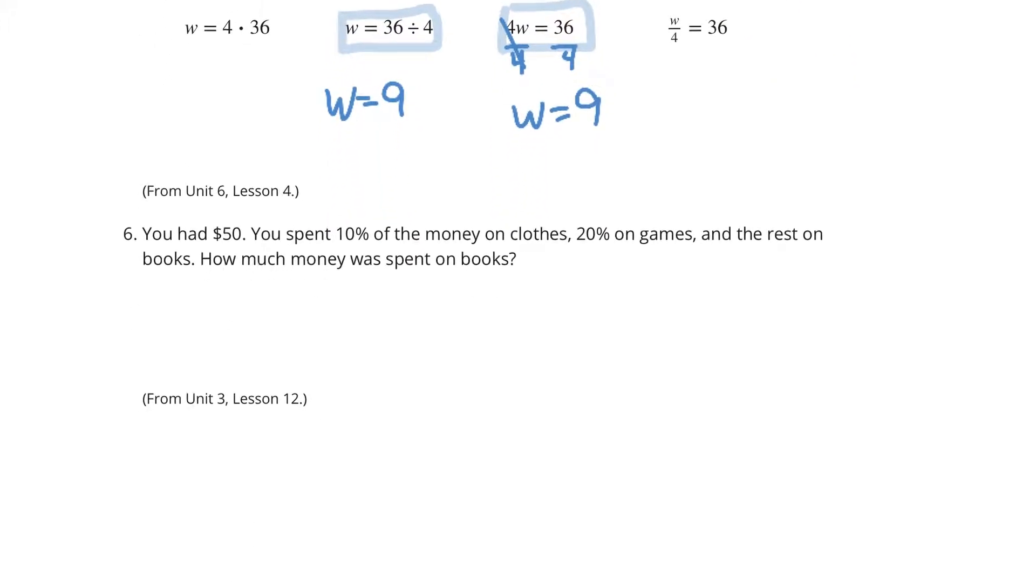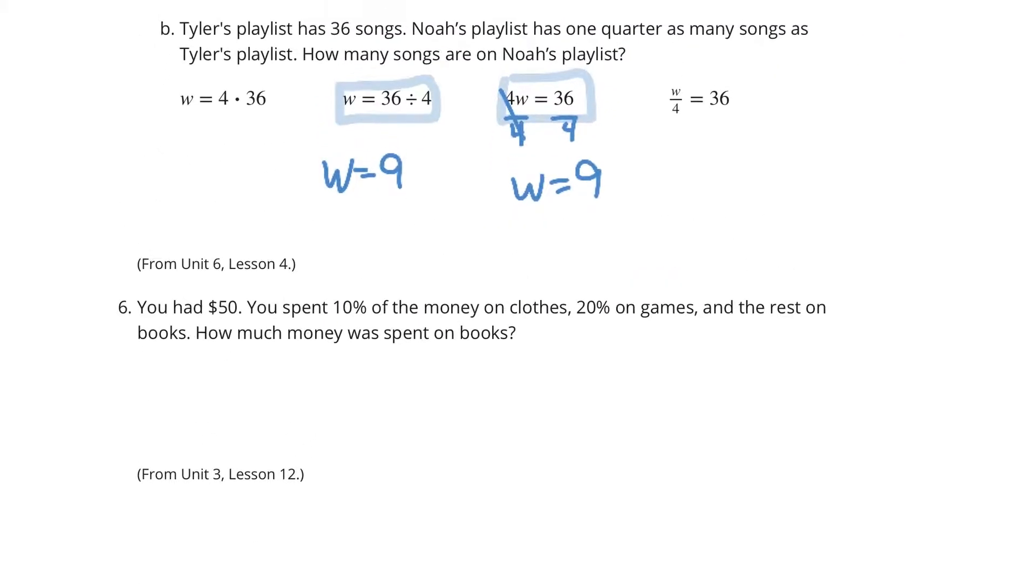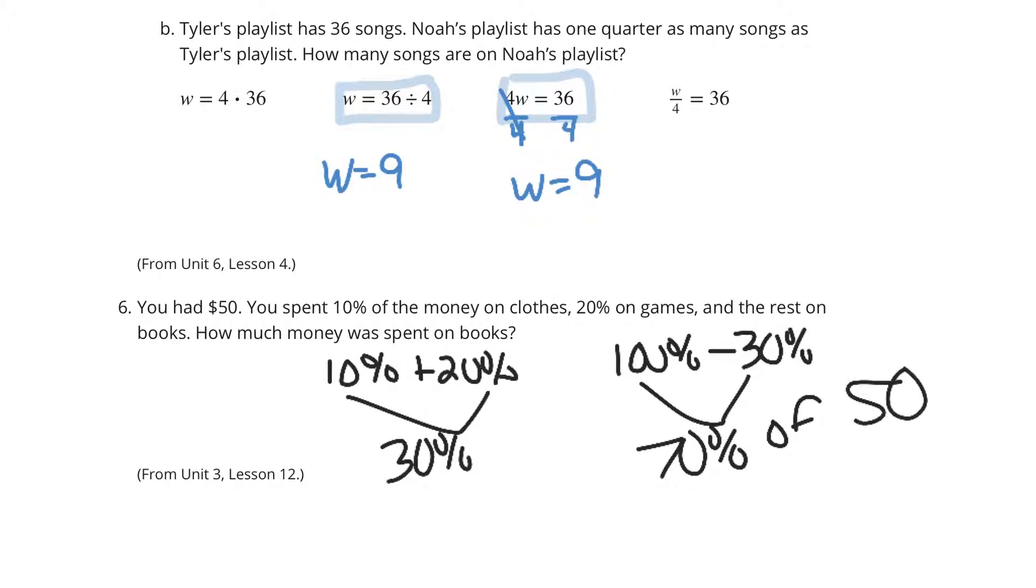You had $50. You spent 10% of the money on clothes, 20% on games, and the rest on books. How much money was spent on books? Well, if we take our percentages, our 10% and our 20%, that's 30% that you spent on clothes and games. The rest, total of 100 minus 30% spent, is 70%. So we're looking for 70% of the $50, which as a decimal will be 0.7 times 50.